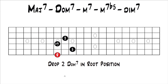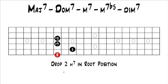Now we have a drop 2 dominant 7th chord in root position. The next chord we're going to get to by moving one note is the minor 7th. To get to a minor 7th, we just have to move the major 3rd down half a step to a minor 3rd. The only difference between a dominant 7th chord and a minor 7th chord is that a minor 7th chord has a minor 3rd and a dominant 7th chord has a major 3rd. So if we move that note down half a step, we end up with a drop 2 minor 7th chord in root position.